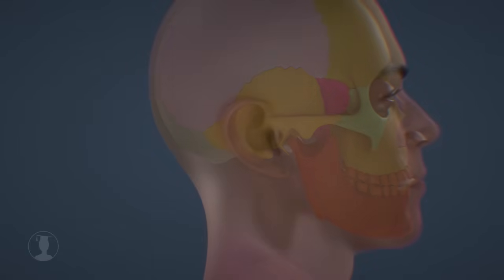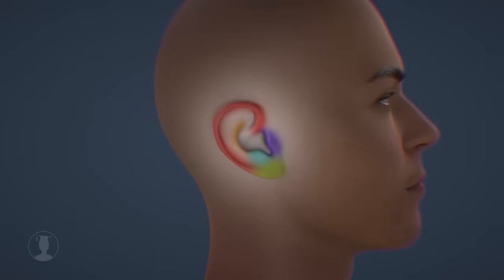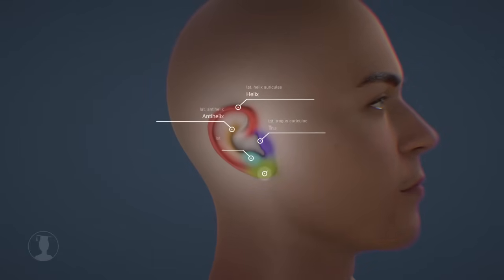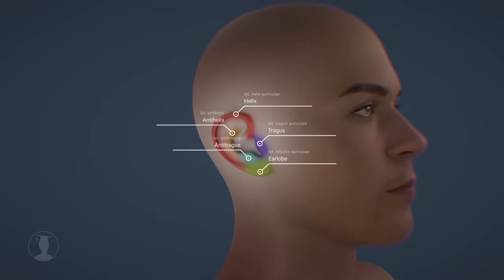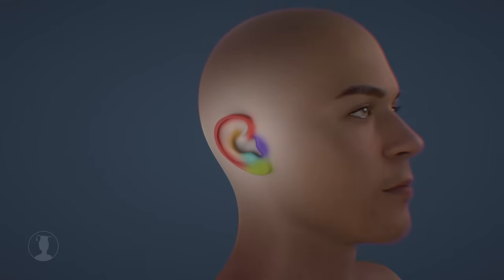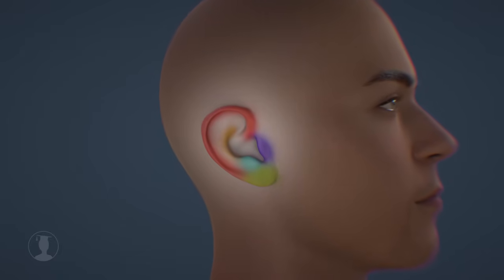The pinna is also commonly divided into different areas, only some of which are shown here. These different areas help to reflect, absorb and attenuate sound differently, allowing us to identify where a sound source is located.